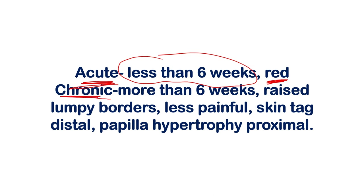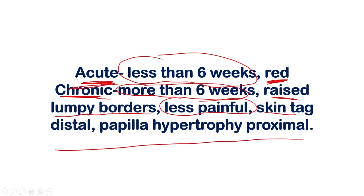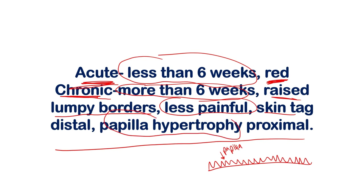In the chronic situation, it's been going on more than six weeks. You will have raised, lumpy borders and it's usually less painful. Two other features are more characteristic of the chronic state: skin tags — a little area of skin sticking out distal to the tear — and papilla hypertrophy proximal to the actual longitudinal tear, which would be visible on a histological slide.